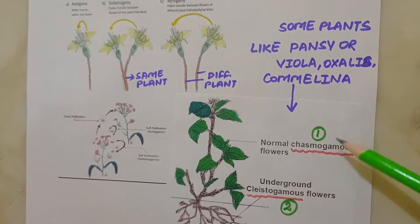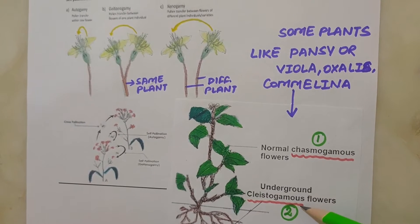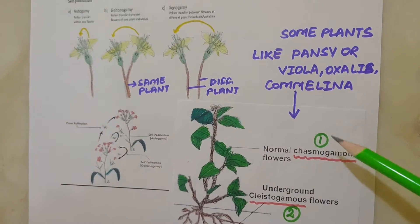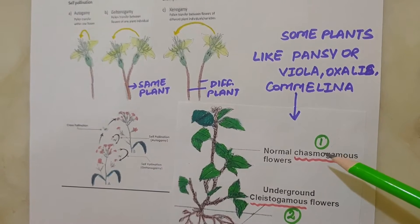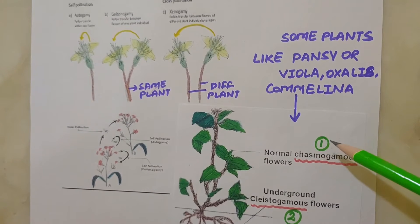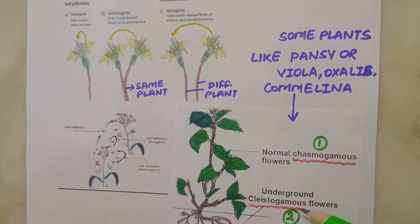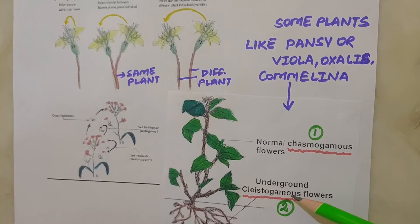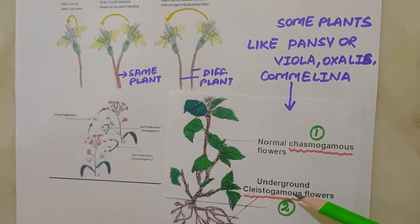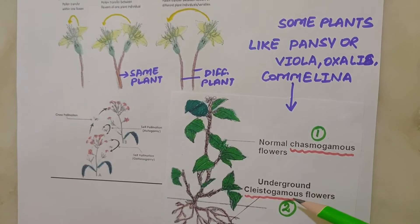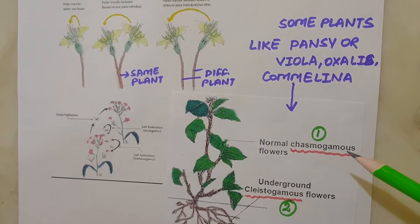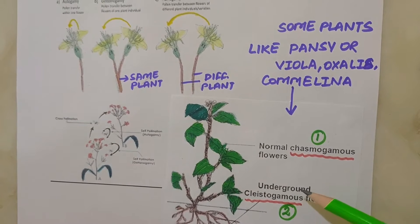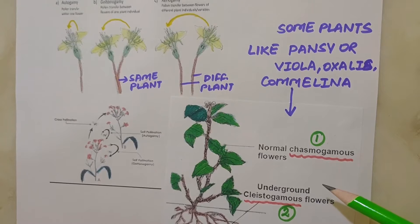One is chasmogamous and the other is cleistogamous. Chasmogamous flowers are similar to flowers of other species with exposed anthers and stigma, where both self-pollination and cross-pollination can occur. But in cleistogamous flowers, which do not open at all, the anther and stigma lie close to each other. When the anther dehisces in the flower bud, pollen grains come in contact with the stigma to effect pollination. Thus, cleistogamous flowers are invariably autogamous as there is no chance of cross-pollination.